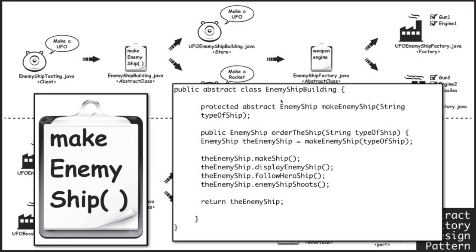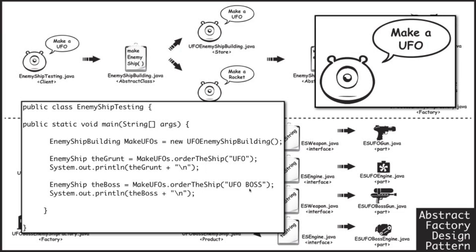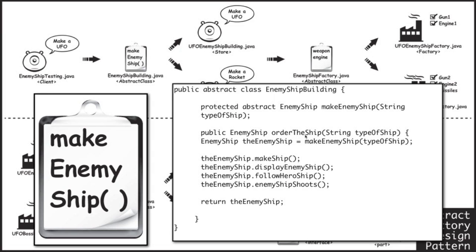Let's take a look at this abstract class — enemy ship building. It's an abstract class that demands that any specific order forms are going to be able to make an enemy ship. The string type of ship is going to be either UFO or UFO boss, as you can see — UFO, UFO boss. That string gets passed in, and this acts as an order mechanism for creating enemy ships that have a weapon, engine, and name — nothing else. The specific parts used for engine and weapon depend upon the string that is passed, which is type of ship. After the ship is created, these methods — make ship, display enemy ship — run and output information to the screen. This is the abstract order form.